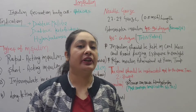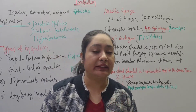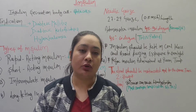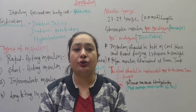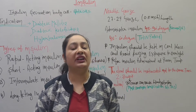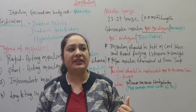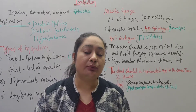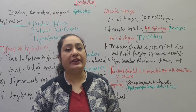When selecting an anatomical area for injection, the most common and preferred site is the abdominal area, near the umbilicus. Other sites include the arm, shoulder, and thigh, but the abdominal area is the most commonly used.